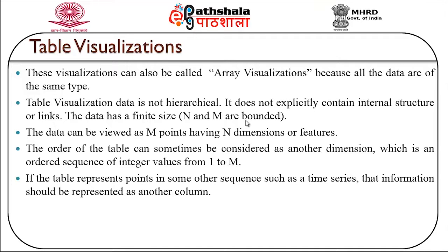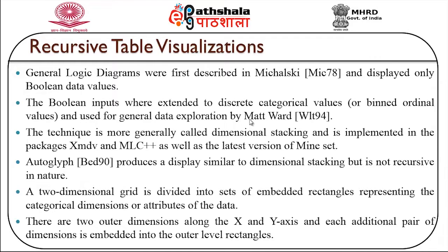Table visualization data is usually not hierarchical in nature and does not explicitly contain internal structures or links. The data has a finite size where m and n are bounded, and can be viewed as m points having n dimensions or features. The order of the table can sometimes be considered as another dimension — an ordered sequence of integer values starting from 1 to m. If the table represents points in a sequence such as a time series, that information should be represented as another column in table visualization.